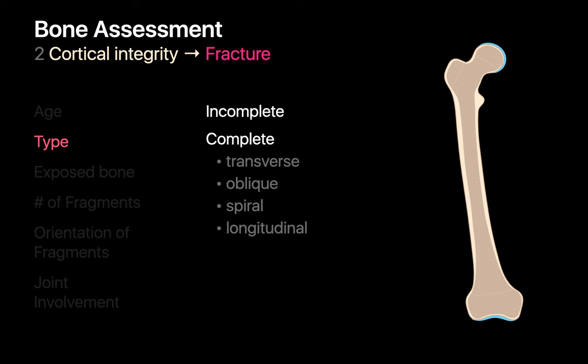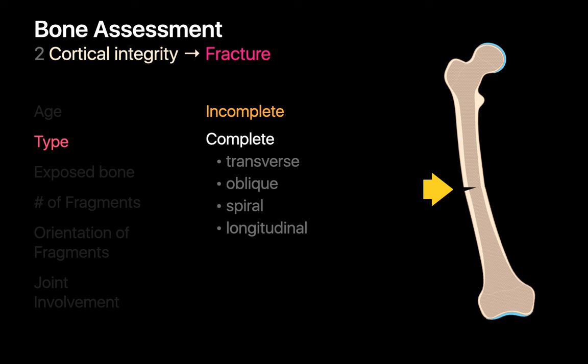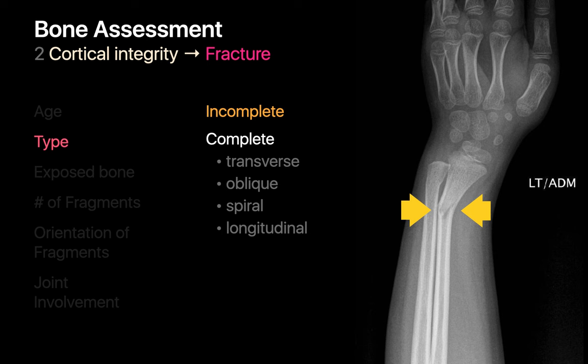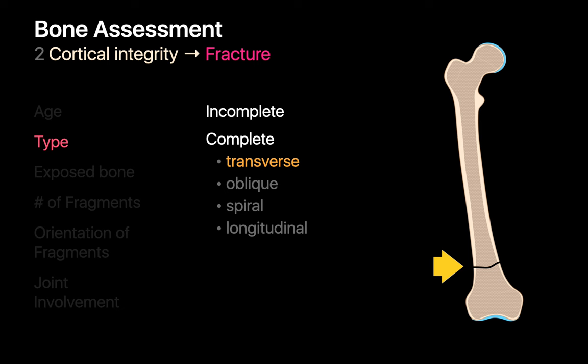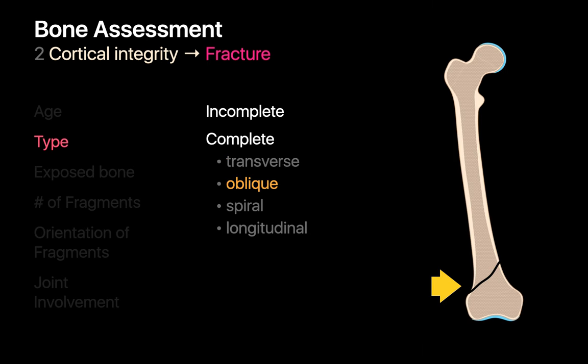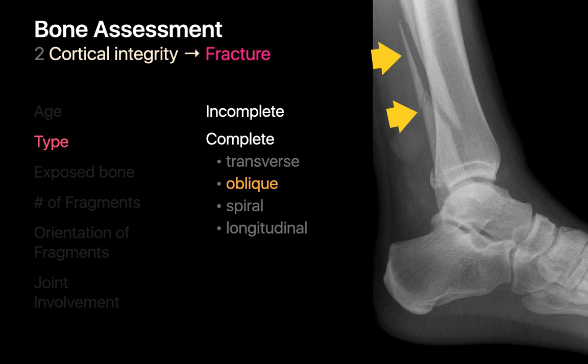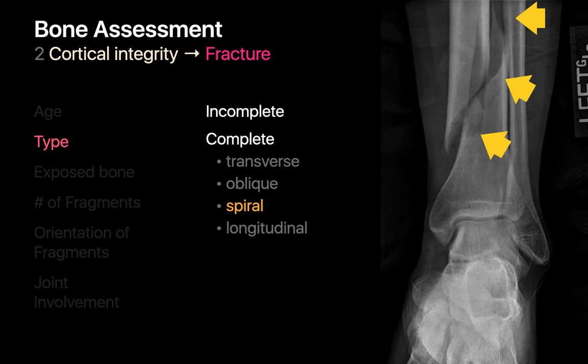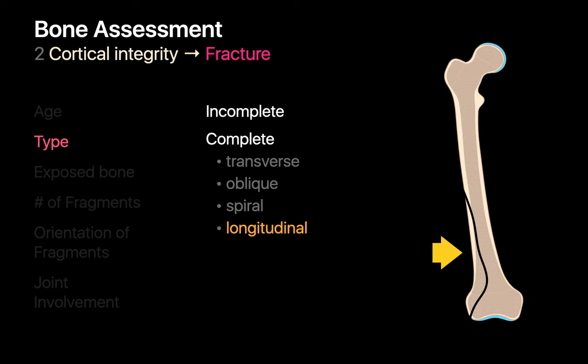Describe the fracture type. Some fractures, particularly those in kids, may not result in a clean break and are incomplete — folks sometimes call these greenstick fractures. Most fractures, however, are complete. Complete fractures are subdivided by how the fracture plane runs. If this is a complete fracture, is it transverse, oblique, spiral, or longitudinal?